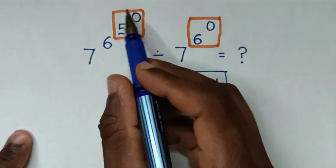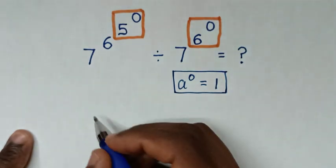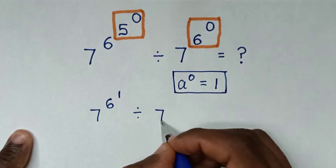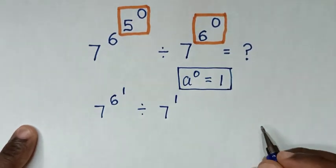Then in here I will substitute 1 and here I will substitute 1. So it will be 7^6^1 ÷ 7^1.